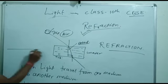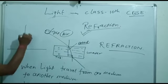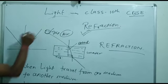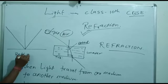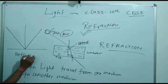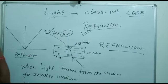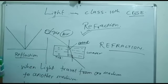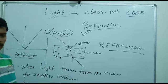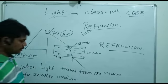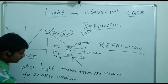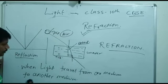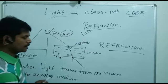So you have understood: when the light stays in the same medium and bounces back, that is reflection. When the medium changes and the light bends, that is refraction.